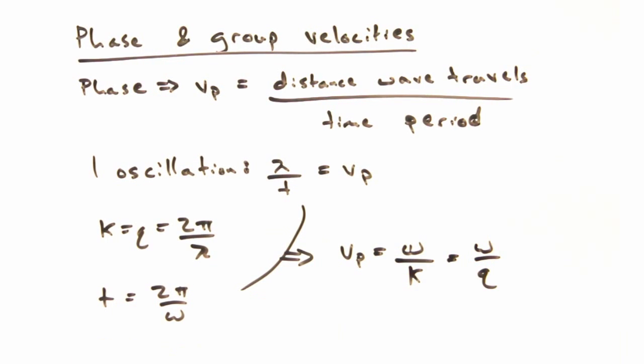Yeah, but let's move some things around. We know that k is 2 pi over lambda, and that the period is 2 pi over the angular frequency of the wave. Now what do we get? Omega over k.